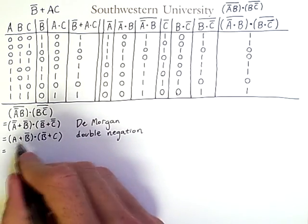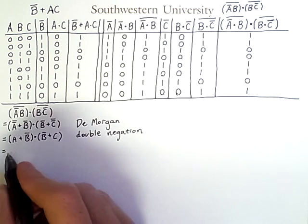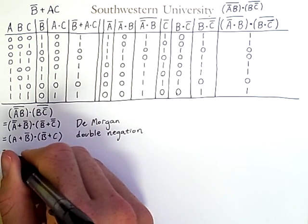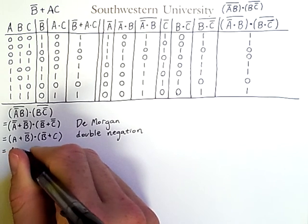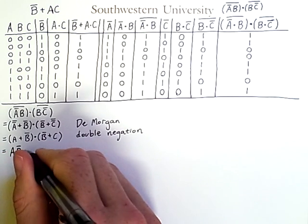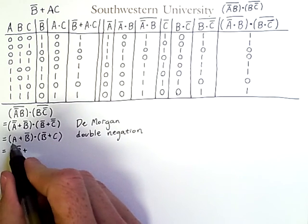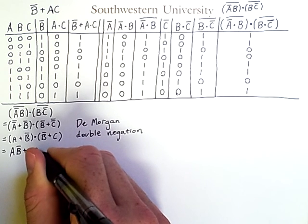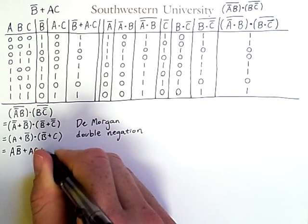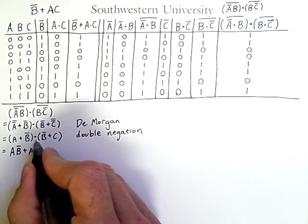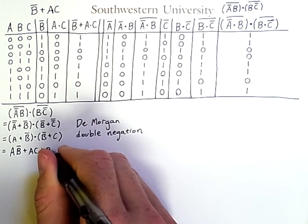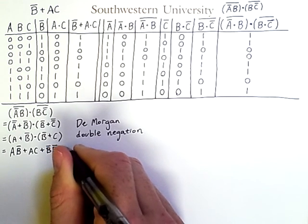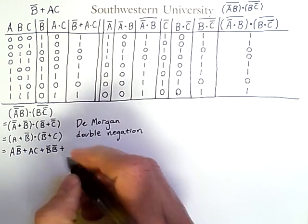I'm distributing multiplication over plus, or rather, AND over OR. And the result is that I have A and not-B or A and C or not-B and not-B or not-B and C.